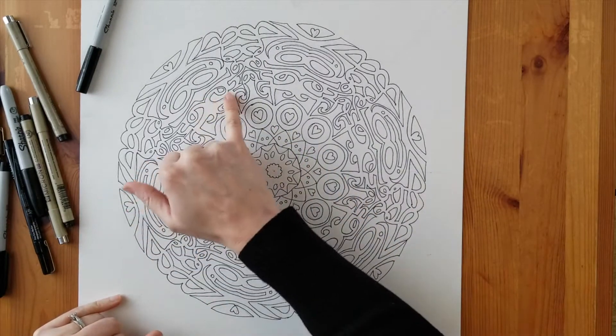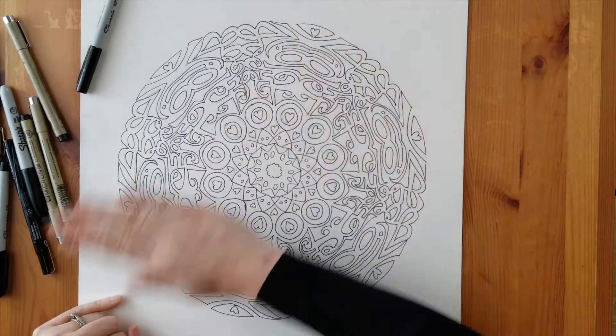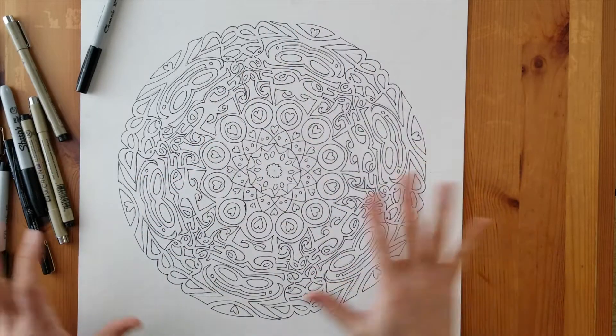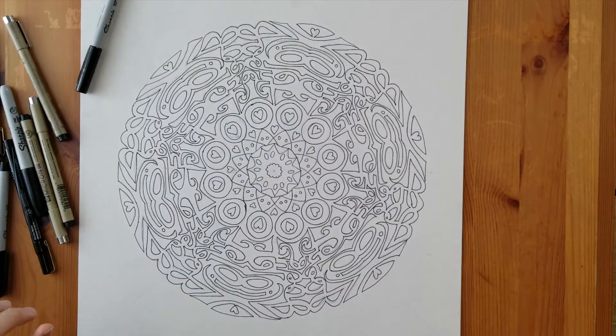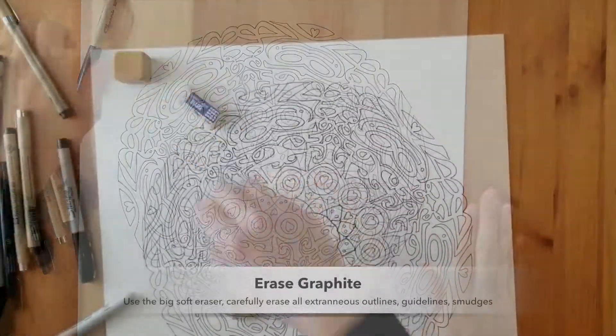Anything that you know is popping through any of the inked lines, you want to go over the whole thing with a nice big soft eraser and get rid of any of the extra graphite, these smudges that might have happened as well. So you're going to erase extra graphite.